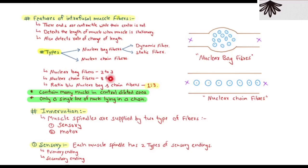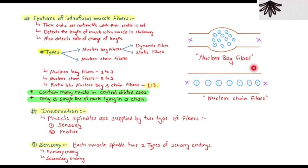Generally there are 2–3 nuclear bag fibers and 8–9 nuclear chain fibers. The ratio between nuclear bag and chain fibers is 1:3. The two types differ according to their shape and size — in nuclear bag fibers the central part is dilated.